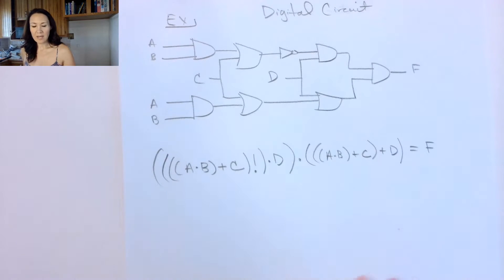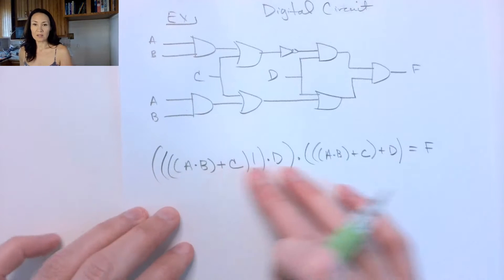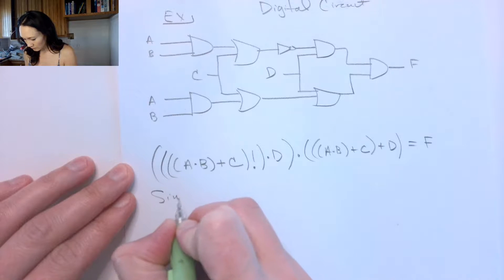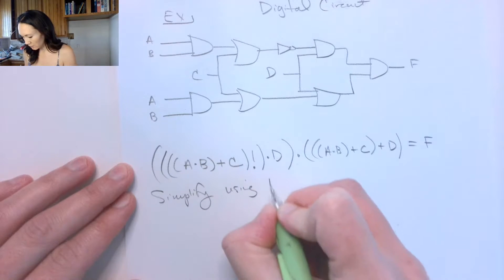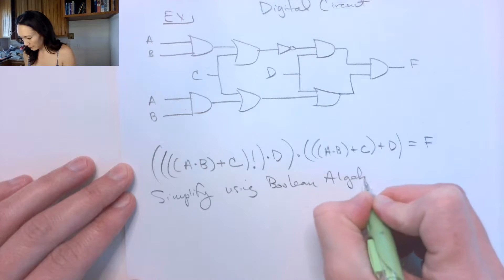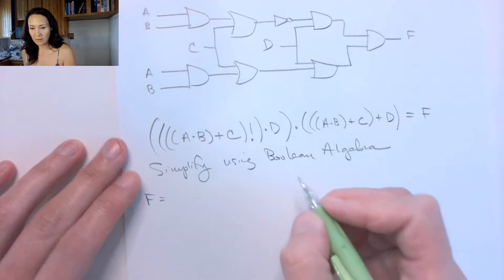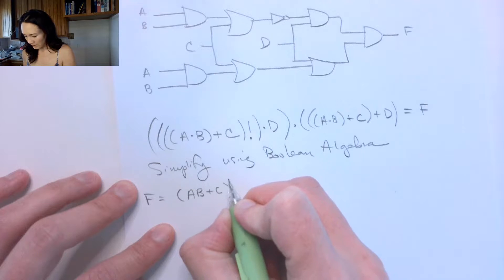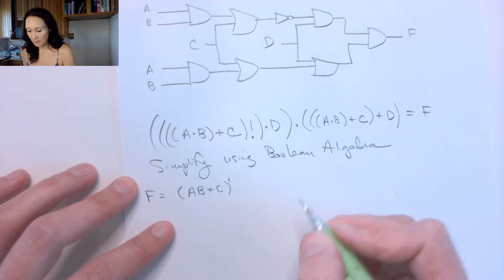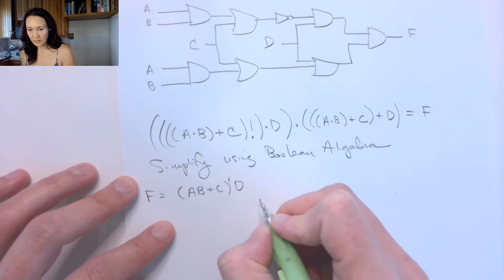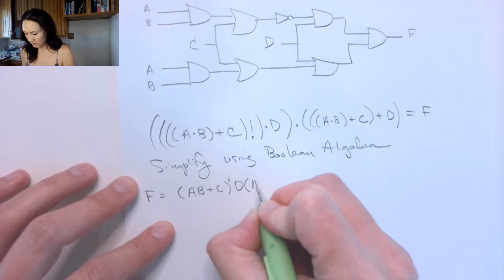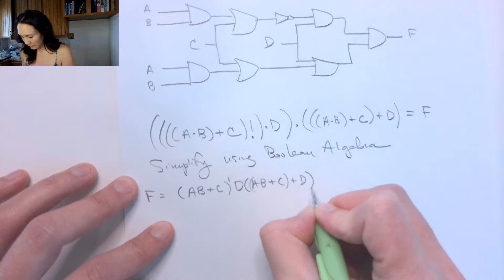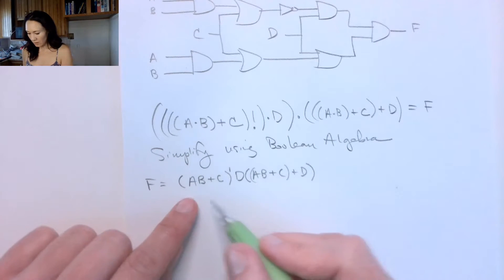Now we're probably going to be asked to use Boolean algebra to simplify this long expression into something less complicated, so let's do that. I'm going to simplify using Boolean algebra. F can be written as: A and B OR'd with C, and that gets complemented — I'm going to switch to complement notation. That is ANDed with D, and D is ANDed with A and B OR'd with C, and that result is OR'd with D.